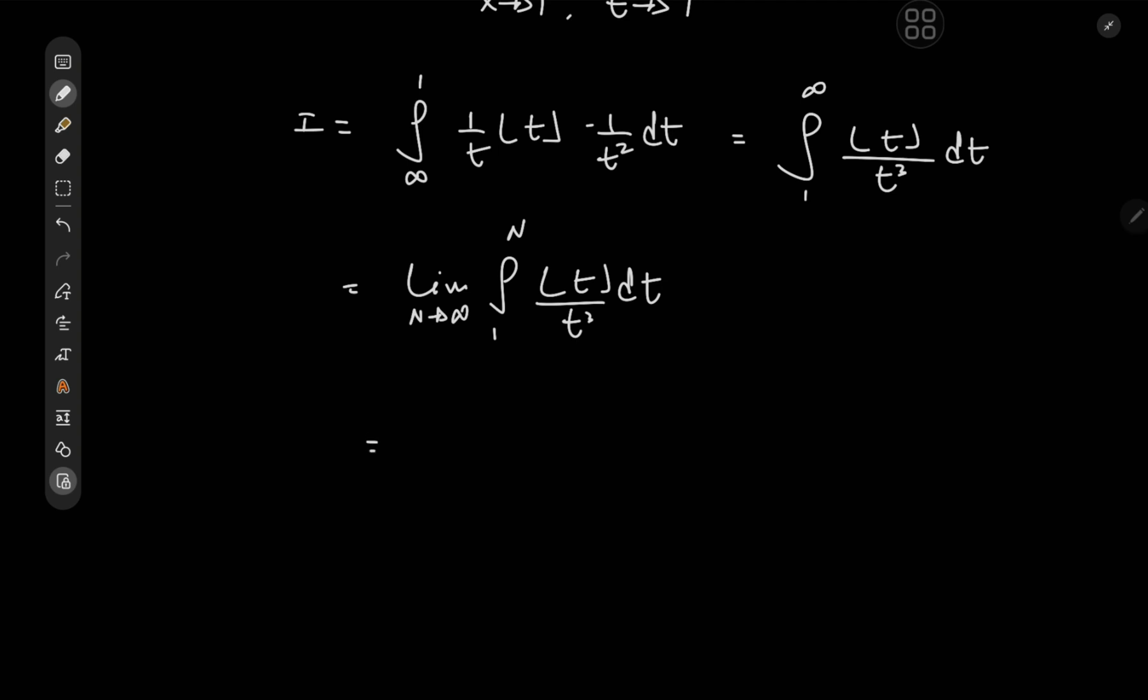We have the integral from 1 to n, right? So why not write this as the limit as n goes to infinity of the integral from 1 to 2 plus the integral from 2 to 3 plus etc etc all the way up to the integral from n minus 1 to n of floor of t divided by t cubed dt.